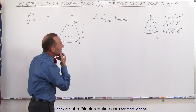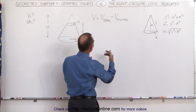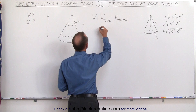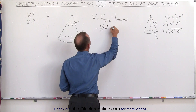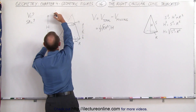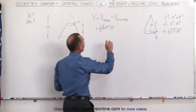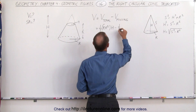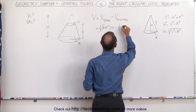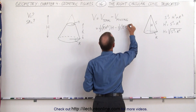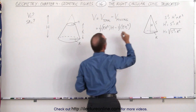Thinking back on the previous video, the volume of a cone is one-third the area of the base times the height. So this would be equal to one-third pi R-squared times the total height, which we call large H. Then we subtract the volume of the missing piece, which is minus one-third pi times small r-squared times the height of that piece, which is big H minus little h.